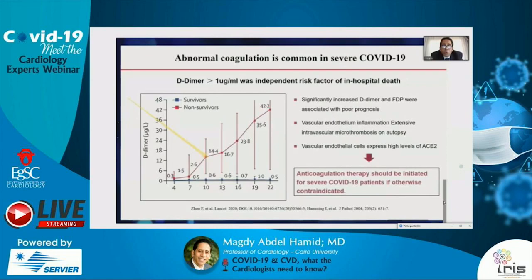Abnormal coagulation is common in severe COVID-19 and D-dimer levels can be increased. Significantly elevated D-dimer is associated with poor prognosis, as are fibrin degradation products. Vascular endothelium inflammation with extensive intravascular microthrombosis has been detected on autopsy. This raises the question: do we need anticoagulation in those patients? Anticoagulation therapy should be considered and initiated for severe COVID-19 patients if not contraindicated, because pulmonary embolism is common in this situation.